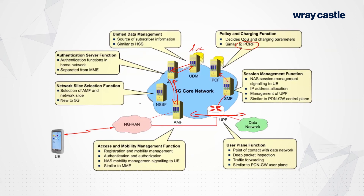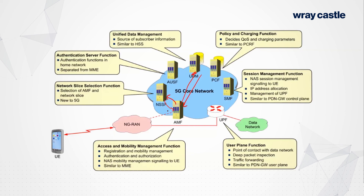Because this network supports network slicing, we have a new function: the Network Slice Selection Function (NSSF). During the registration procedure, the AMF talks to the UDM and retrieves subscription-related information, which includes a description of the network slices the UE may want to connect to — for example a mobile broadband slice, a voice-over-IP slice, and so on. The AMF then contacts the NSSF to ask how to find those slices and which network functions support them.